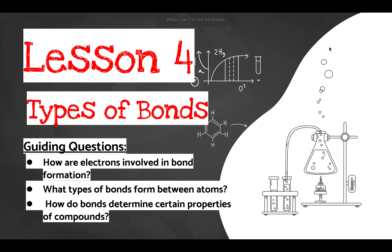In our last section we learned all about elements on the periodic table. In this section we are going to learn about what happens when those elements get together and make compounds. Things we learned before, like valence electrons — how many an element has — determines what type of compound it will form and how it forms that compound.